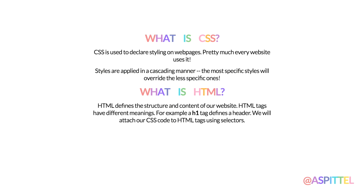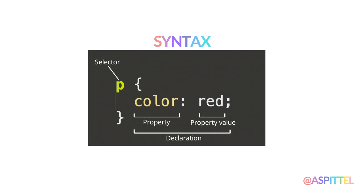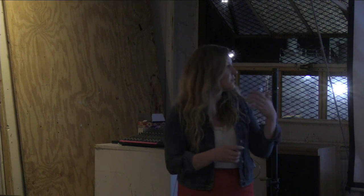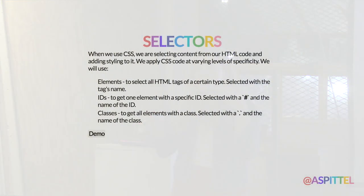So what is CSS? CSS adds style to your website. Pretty much every website you go to has CSS attached to it, otherwise it's really boring HTML. HTML makes up the content of your websites. The syntax for CSS looks something like this: you have a selector, which grabs something from your HTML code, and then you add style to it with properties and property values. You can select items using element selectors, select by ID — one element at a time — or use classes to select groups of elements.